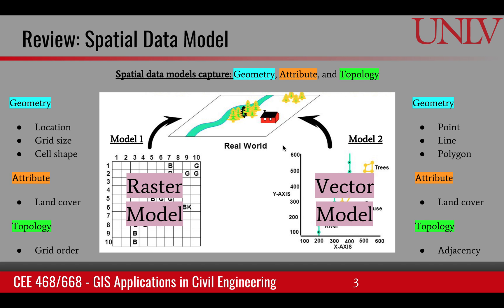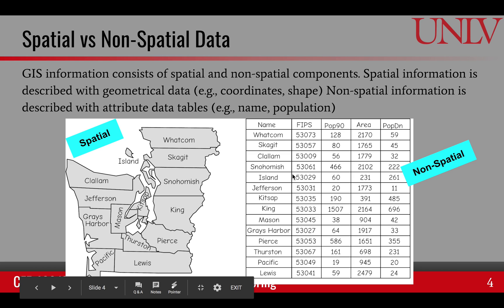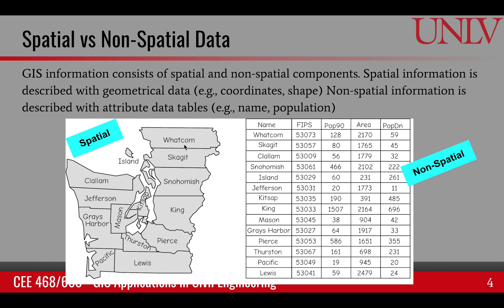If we look at GIS modeling, we have spatial and non-spatial data in the model. The spatial data provides the coordinates and shapes on the surface, whereas the non-spatial data provides the attributes associated with those coordinates and shapes. For example, the shapes are polygons — they are the counties — and the attribute table, which provides non-spatial data, includes the population of the county and other attributes about it.